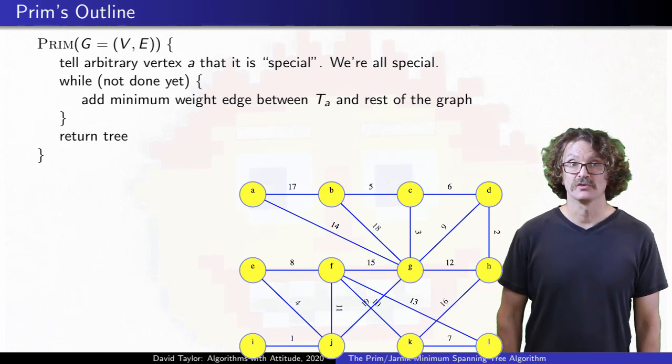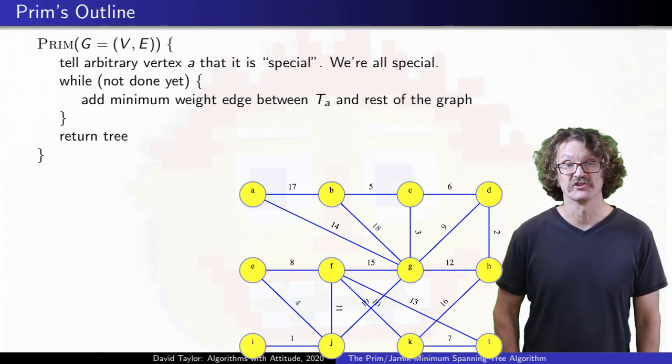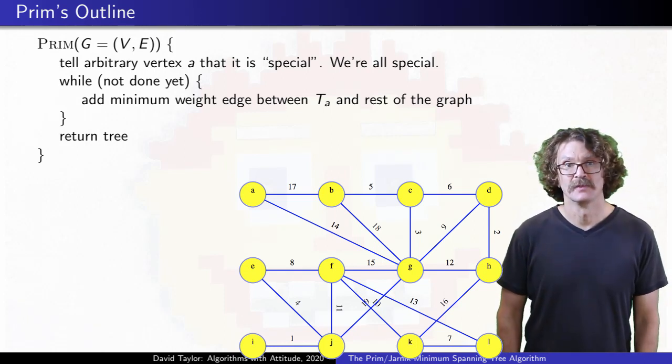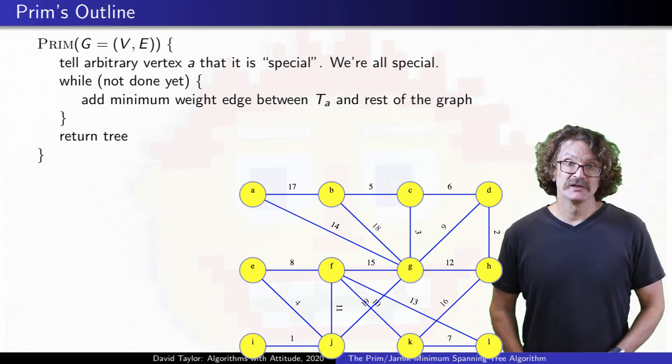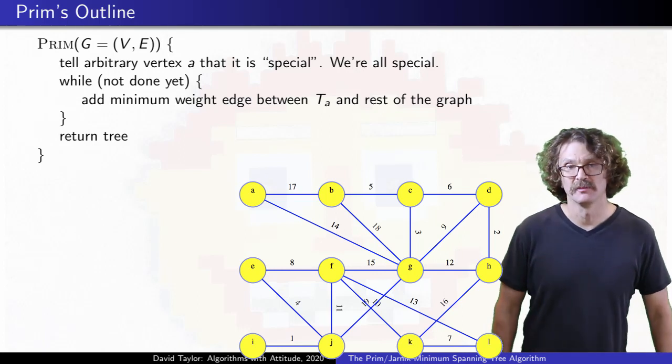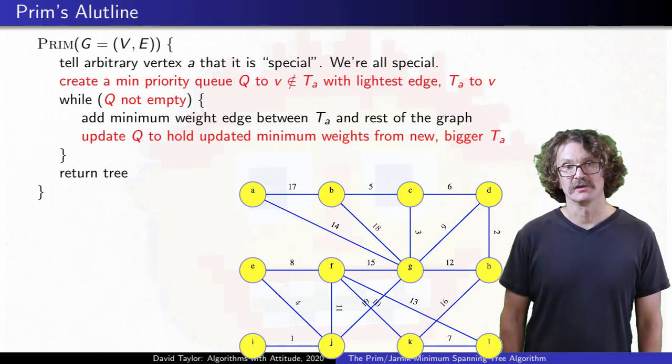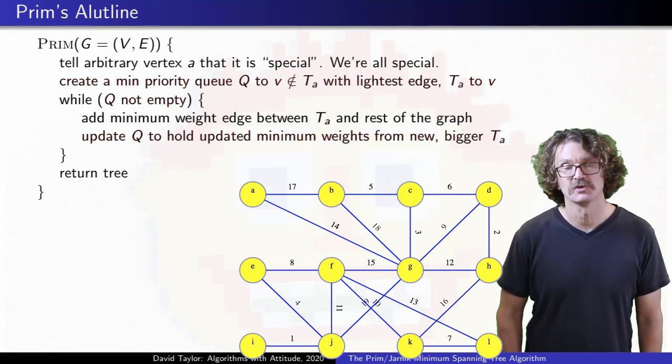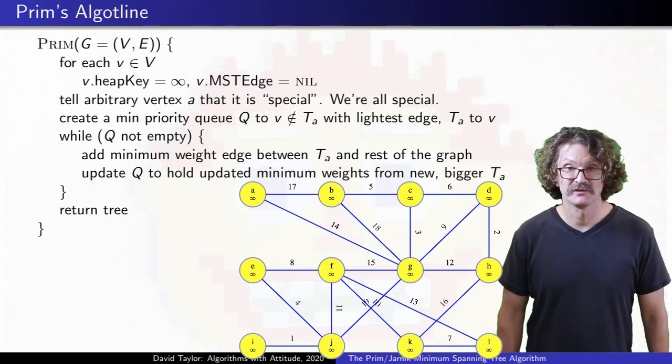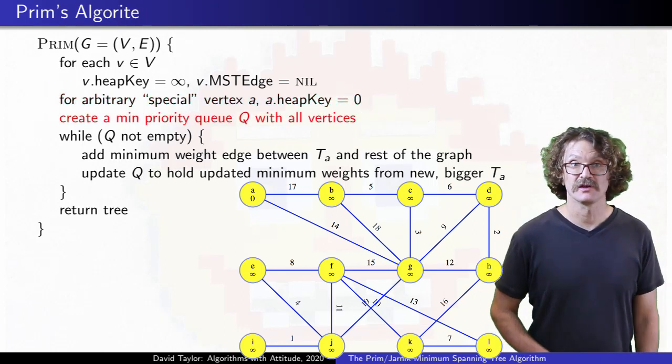Step by step, we will replace the outline with the algorithm. We want to efficiently track the minimum weight edge from the special tree. That edge must lead to one of the vertices not yet in the tree. For each vertex not in the tree, store its minimum weight edge from the special tree as a potential minimum spanning tree. We put those edges into a priority queue, with the key for each vertex being the weight of the edge from our special tree to reach that vertex. Add initialization into the outline, where everything gets initialized with an infinite key, except our special vertex gets zero. That will be the first vertex out of the queue.